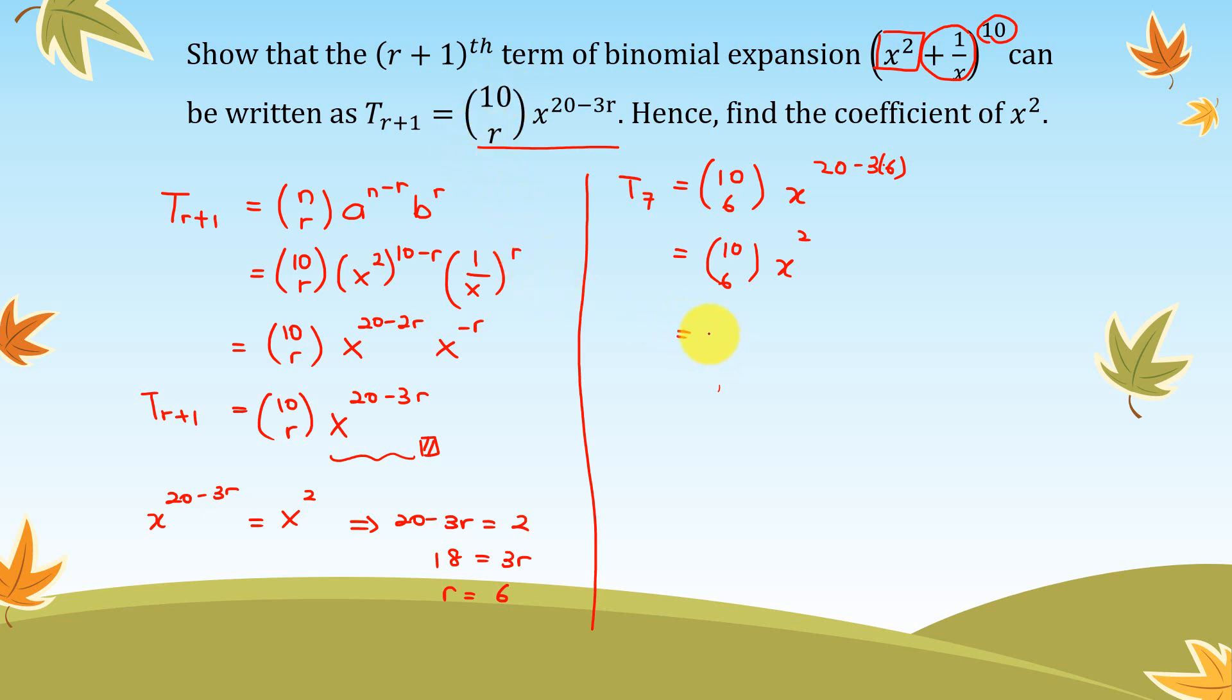So 10 choose 6 is 210. So this is 210x². So again, the question asks for the coefficient, so we have to write down the coefficient. So the coefficient of x² is 210.